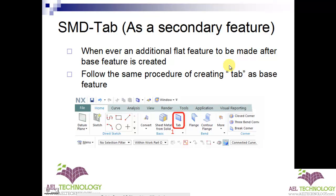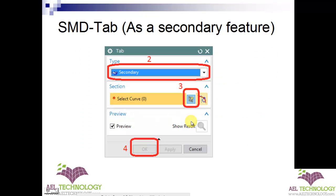Whenever we have created a base feature and again we want to create a feature like tab, we will call it a secondary feature tab. We will be following the same procedure of creating a tab as a base feature, such as clicking on the tab icon. You will get the tab dialog box, wherein in tab as a primary feature or base feature, in type we will be selecting it as base — that is the only option at that time.